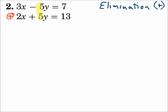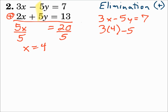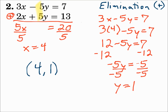Add the equations together: 3x plus 2x is 5x. Negative 5y plus 5y is 0, so the y is eliminated. 7 plus 13 is 20. Divide both sides by 5, and x is 4. Now substitute 4 in for x in the first equation: 3x minus 5y equals 7. 3 times 4 is 12. Subtract 12 from each side, and negative 5y equals negative 5. Divide both sides by negative 5, and y is 1. Your final answer is (4, 1). Since the y coefficients matched and the signs were different, we did elimination with addition.